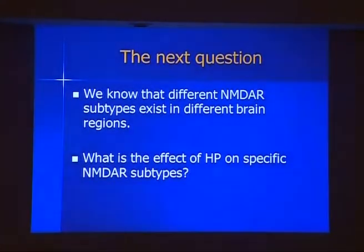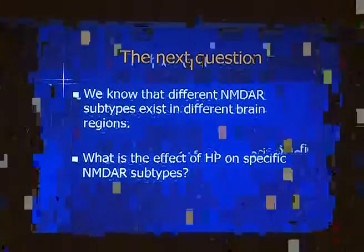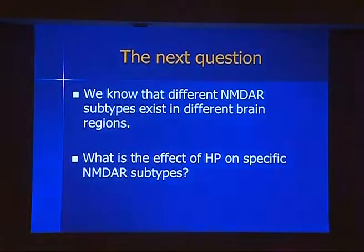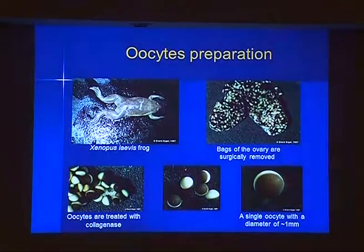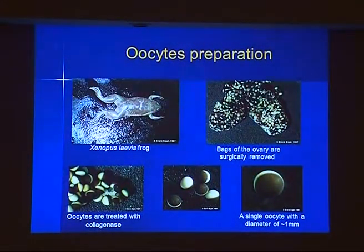To summarize the first stage: hippocampal NMDA receptor currents are significantly augmented under hyperbaric conditions, and the physiological blockade by magnesium is practically abolished under high pressure. The next question was what happens exactly with different NMDA receptor subtypes. We know that different subtypes exist in different brain regions, so if we can know how exactly pressure affects these different subtypes, we can know which brain regions are more susceptible or resistant to pressure. To do so, we had to use a completely different system and build specific receptor subtypes using a protein expression system.